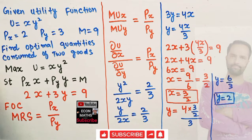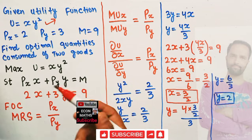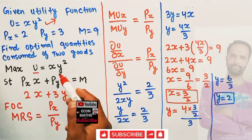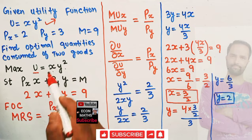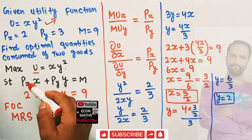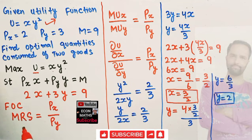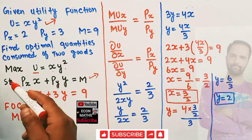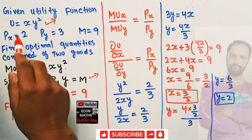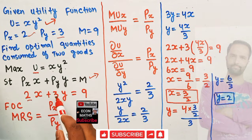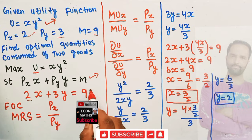We want to maximize the utility of the consumer subject to the budget constraint. The budget constraint is simply: price of good x times units of good x, plus price of good y times units of good y, should be equal to income — meaning income should be exhausted on the two goods. Price of x is 2, price of good y is 3, so we have 2x + 3y = 9.